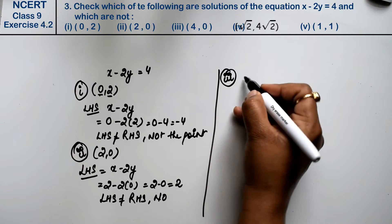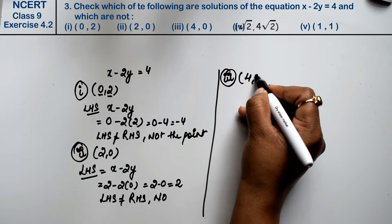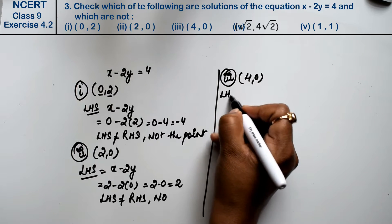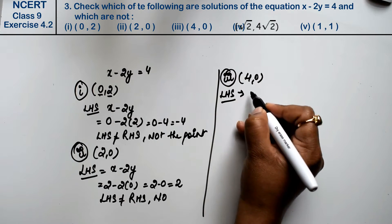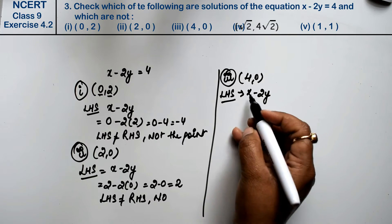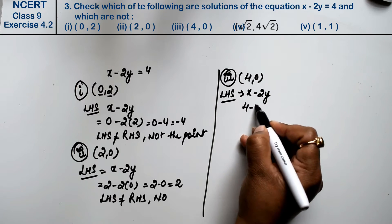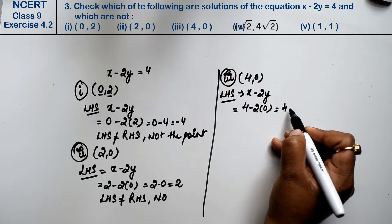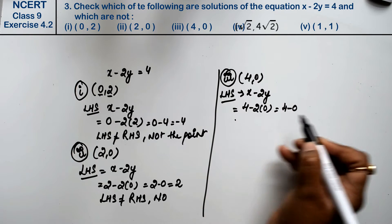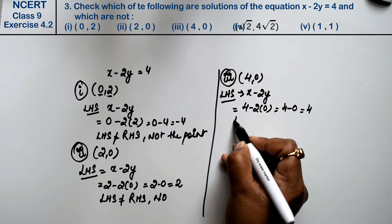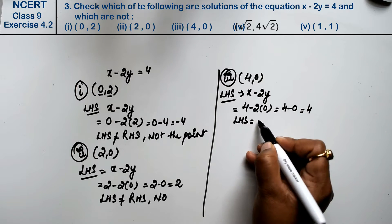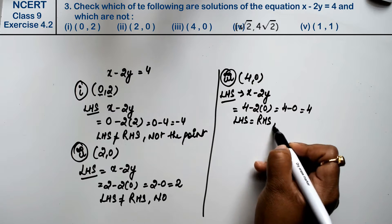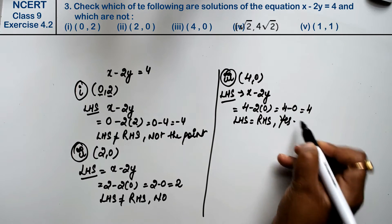Let's do third part. Third part is (4, 0). Left-hand side equation is x minus 2y, so 4 minus 2 into 0. How much is it? 4 minus 0, that is 4. Left-hand side is equal to right-hand side. Yes, it is a point.